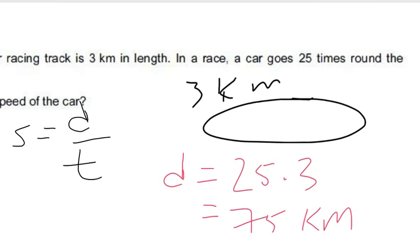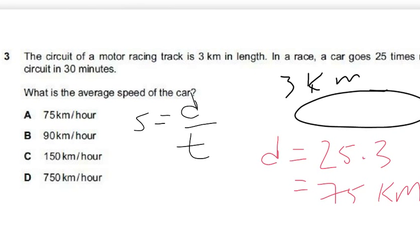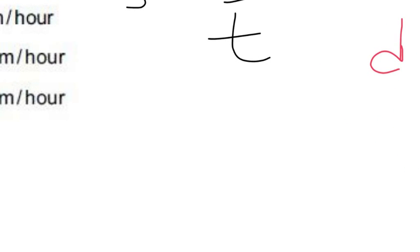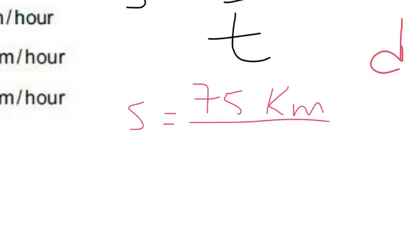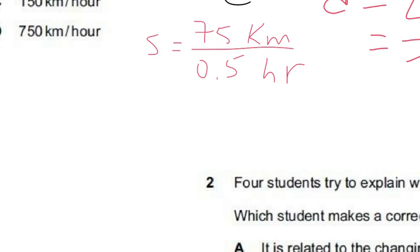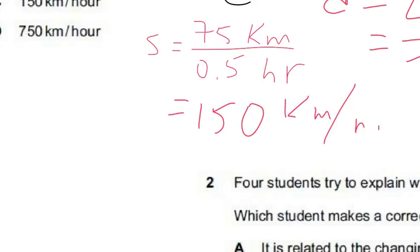The journey took 30 minutes, which is 0.5 hours. We need hours to match the kilometers-per-hour units. So speed = 75 km ÷ 0.5 hours. Dividing by 0.5 is the same as multiplying by 2, giving 150 kilometers per hour as the average speed.